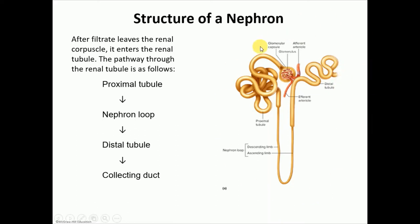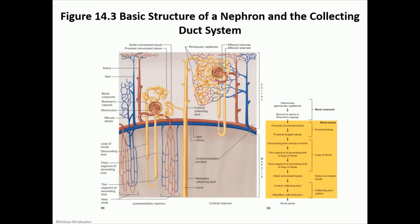You need millions of healthy nephrons for urine to be made. Urine formation starts with filtration in the corpuscle. The fluid passing through the tubules is called filtrate. We may reabsorb things back into the blood or secrete things into the filtrate. Whatever remains at the end of the distal tubules is considered urine.